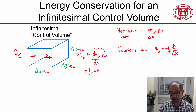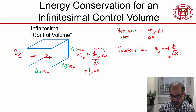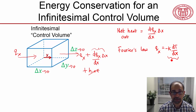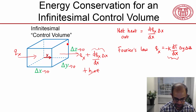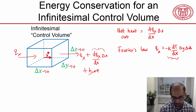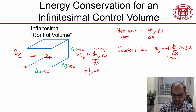K is called thermal conductivity, and we'll assume it's a constant. This term from Fourier's Law is per unit area, so I need to multiply it by the area of the face, which is delta y times delta z, to get the net heat flow through that face.